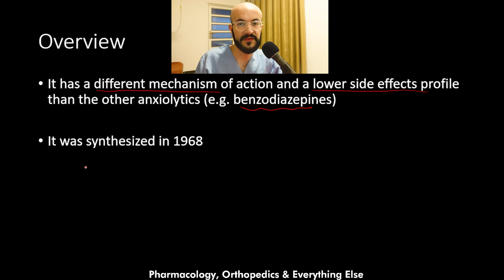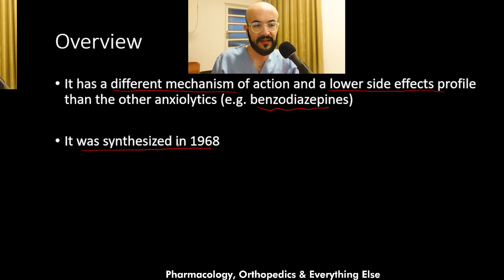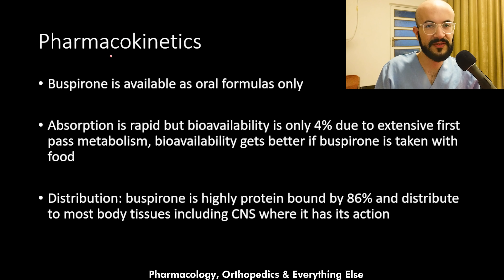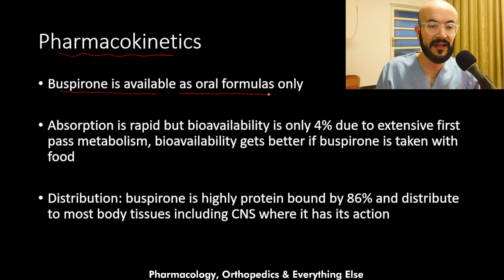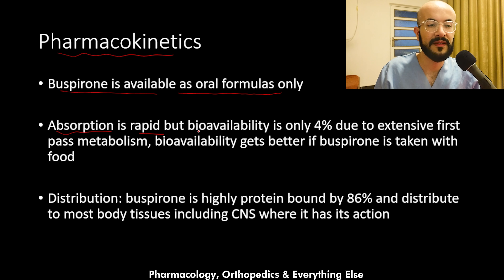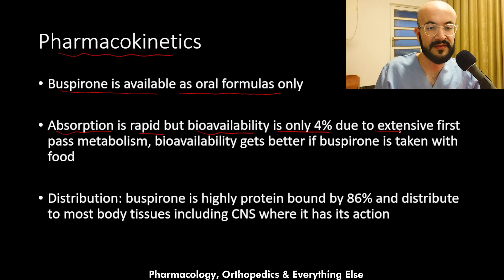Buspirone was first synthesized in 1968. Regarding pharmacokinetics, buspirone is available as oral formulations only. The absorption of the oral formula is rapid, but the bioavailability is only 4%, because there is extensive first-pass metabolism that occurs.